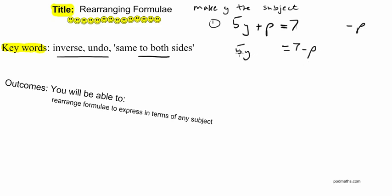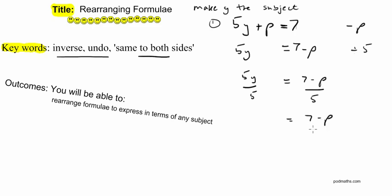The y is nearly there, just being multiplied by 5. So to undo that, I'm going to divide by 5. If I divide both sides by 5 — 5y divided by 5 on the left, and 7 minus p divided by 5 on the right — 5 divided by 5 is 1, leaving just y. And there is my rearranged formula to make y the subject: y equals (7 minus p) over 5.